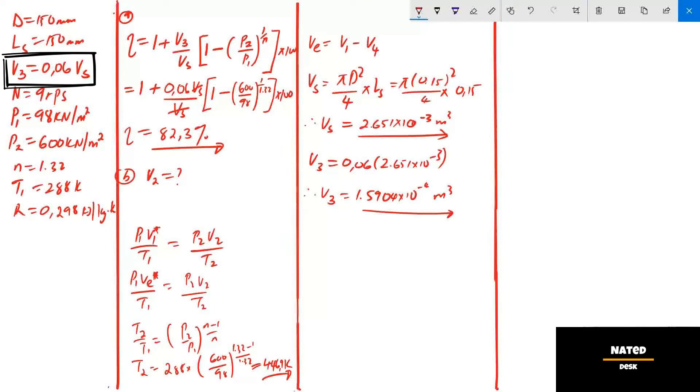Using the formula Vs equals V1 minus V3, from this formula we substitute stroke volume Vs and free volume V3 that we just calculated. We can calculate total volume V1. V1 equals 2.81 times 10 to the exponent minus 3.